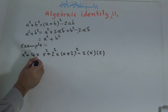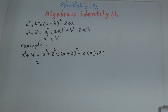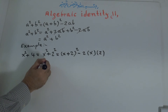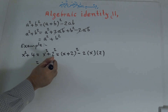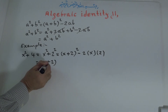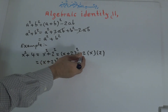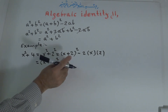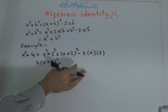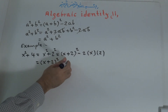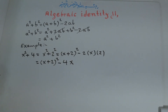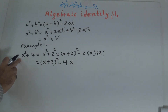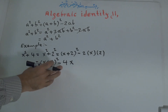So this is equal to x plus 2 to the power of 2, minus 2 times 2. 2 times 2 is 4, so minus 4x. This is x to the power of 2 — same as this one.